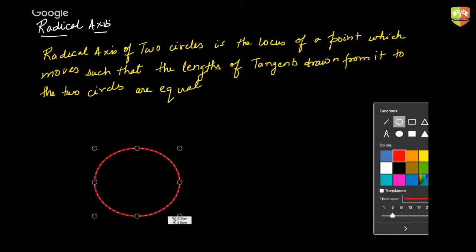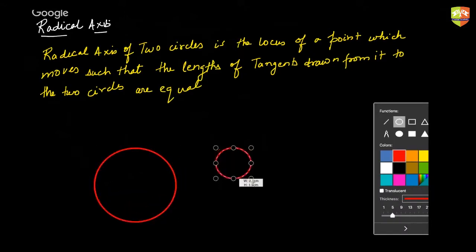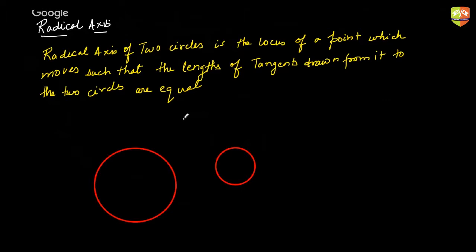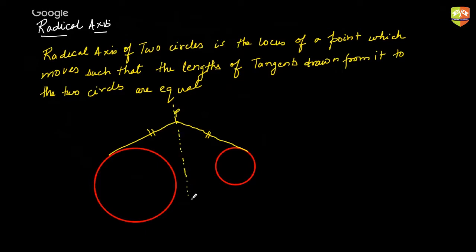So let's say these are the two circles. The locus of such points from where you can draw two tangents of equal length — so let's say there's a point P from where the tangents drawn to these two circles are equal in length — all such points would be called the radical axis.